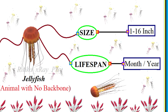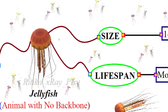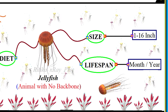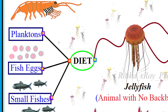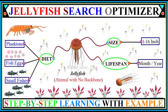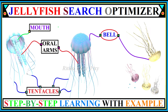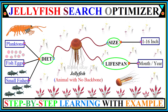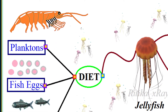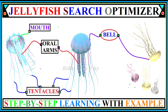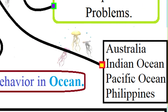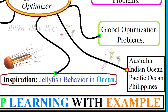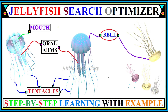Depending on their species, jellyfish can live for one month or one year. They come in a variety of colors and sizes — up to 1 to 16 inches. Their diet includes plankton, fish eggs, small fish species, and nutrient plants. They use their long stinging tentacles to catch plankton, fish eggs, and small fish. Jellyfish can live on the surface water or in the deep sea and are commonly found in Australia, the Indian Ocean, the Pacific Ocean, and the Philippines.